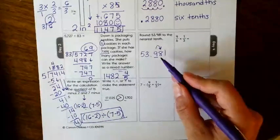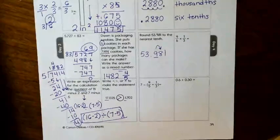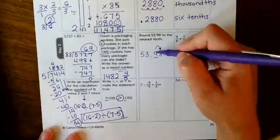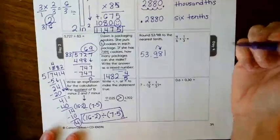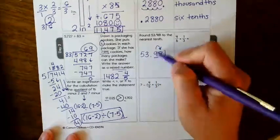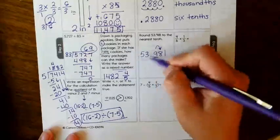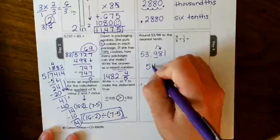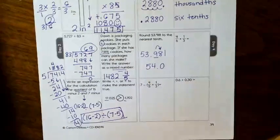The 8 is 5 or above, so you need to give this 9 a shove. Well, 9 becomes 10. Can you fit 10 in this one place? No. So you have to change your whole number. So if this was 10, it would bump your whole number up to 54.0.